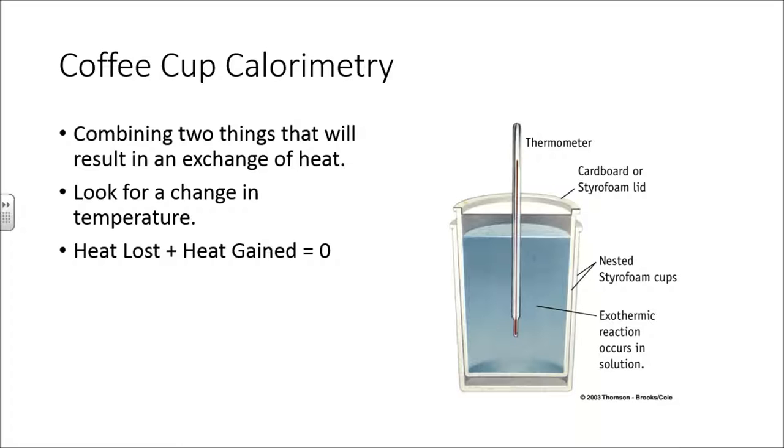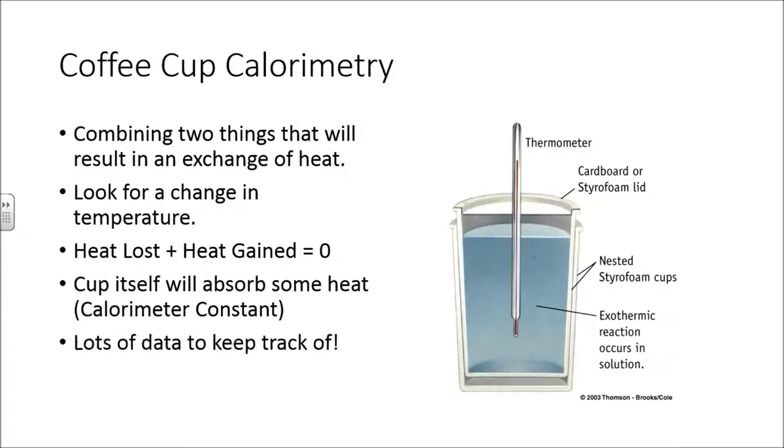The heat loss plus the heat gain should be equal to zero. We know that from the first law. And the cup itself is going to absorb some heat, which means that we're going to have to calculate its calorimeter constant, and that's different for every set of cups that gets used. And there will be a lot of data to keep track of. Please be aware of that as we go into lab.